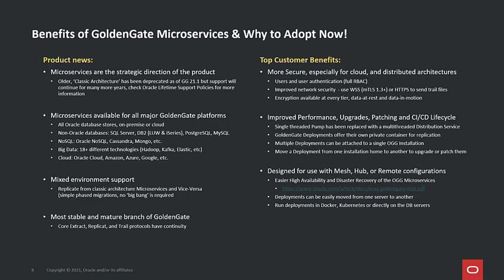Microservices are and have been the main branch for GoldenGate, making this the most stable code line. Our core technologies around extracts, replicates, and trail protocols carry forward from that long tradition of highly stable, rock-solid GoldenGate deployments. On the features side, microservices are much more secure than the Classic architecture. You get full role-based privilege models for role-based access control, new authentication and single sign-on options, and improved network security.